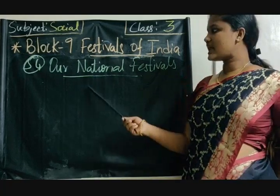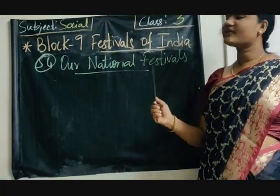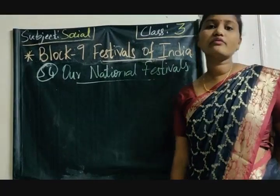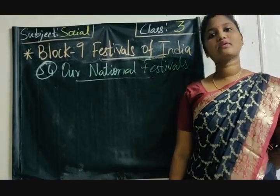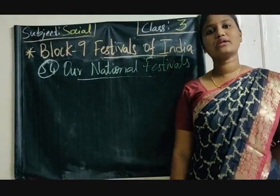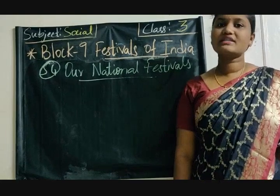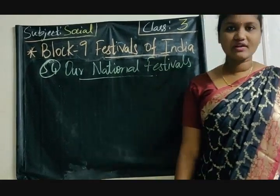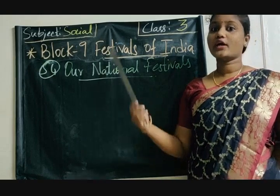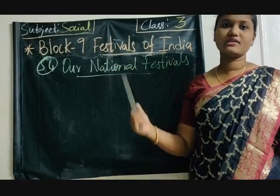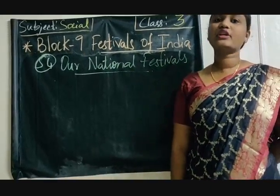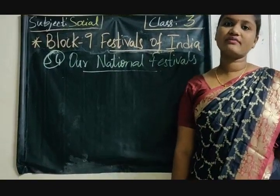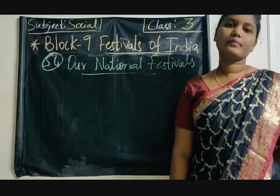In today's class, we will learn about our national festivals. Why do we get a holiday on 15th August and 26th January? Because they are the national festivals. We have regional festivals and harvest festivals, and we also have national festivals. 15th August is our Independence Day and 26th January is Republic Day.